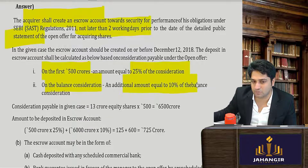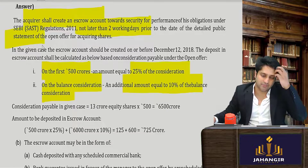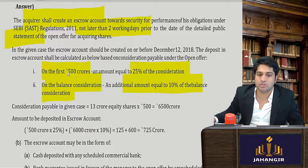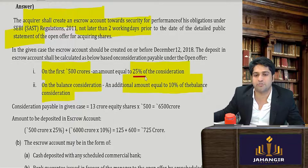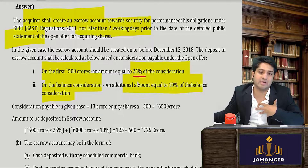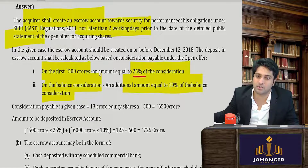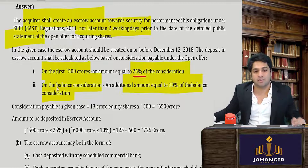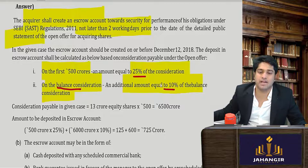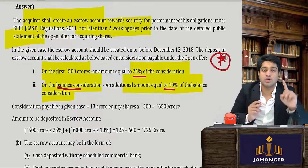For example, if a company's liability is 200 crores, you just give 25% of 200 crores. But if the liability is 700 crores, then for the first 500 crores you give 25%, and for the balance 200 crores you give 10%. Adding them together gives your total escrow deposit requirement.